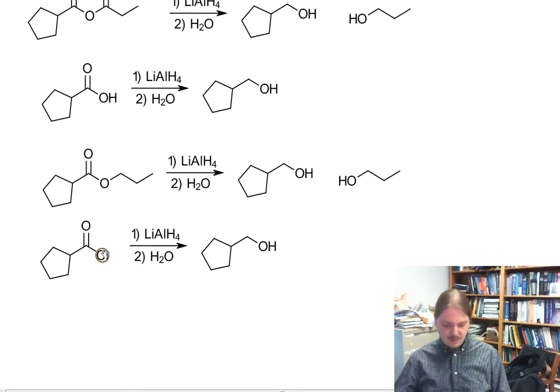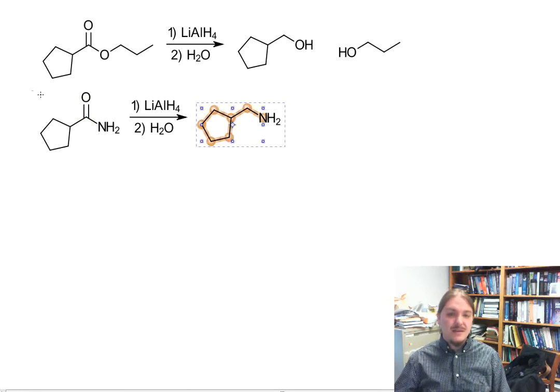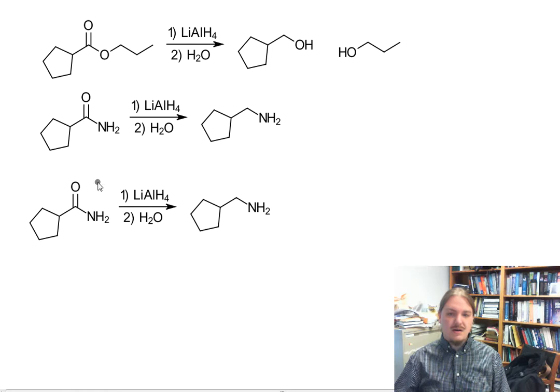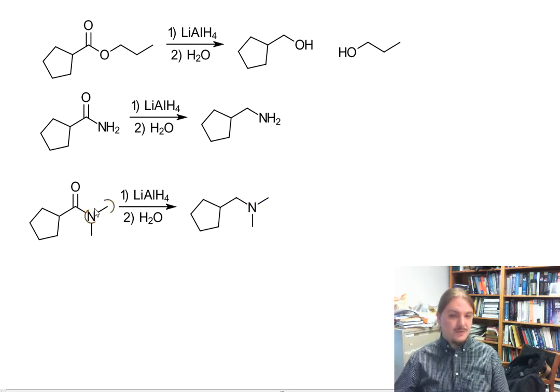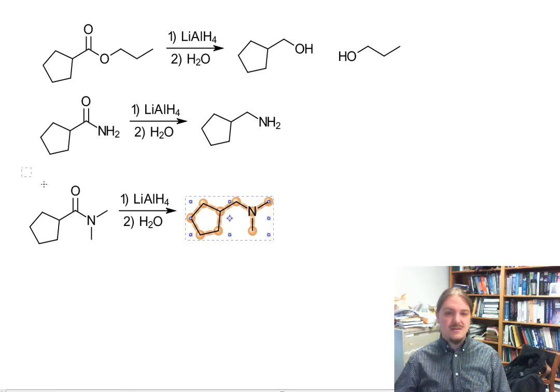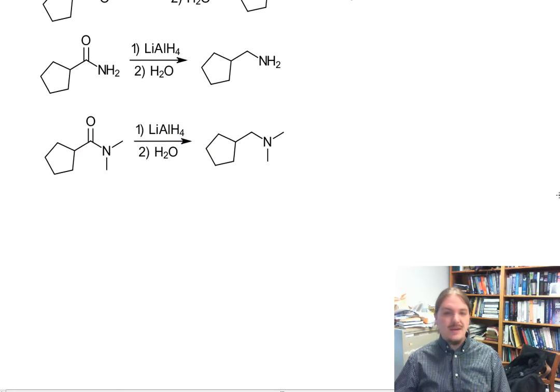And now once we get into the world of amines... amides are reduced by lithium aluminum hydride to make amines. And that's true of amides where there are alkyl groups on the nitrogen and amides where there are hydrogens on the nitrogen. So lithium aluminum hydride just reduces amides to amines.